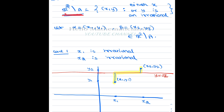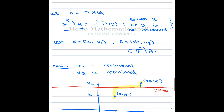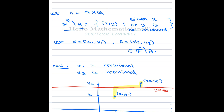R² minus A is the complement of Q×Q. It contains the set of all (x, y) in R² such that either x is irrational or y is irrational. If both coordinates are rational then the point belongs to Q×Q, so if one of the coordinates is irrational then it will be in the complement. Note that both coordinates need not be irrational — that is the main point.